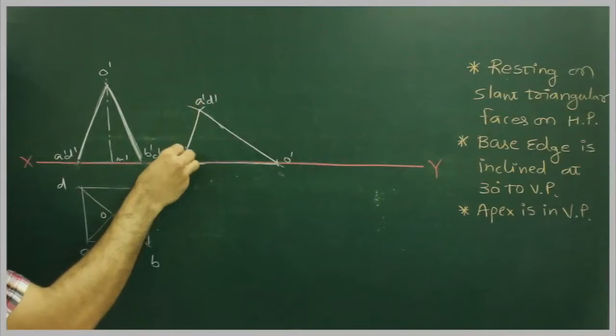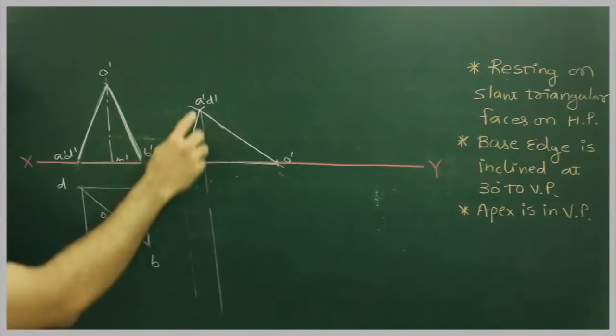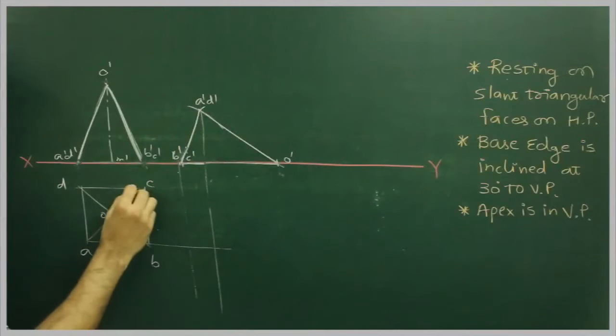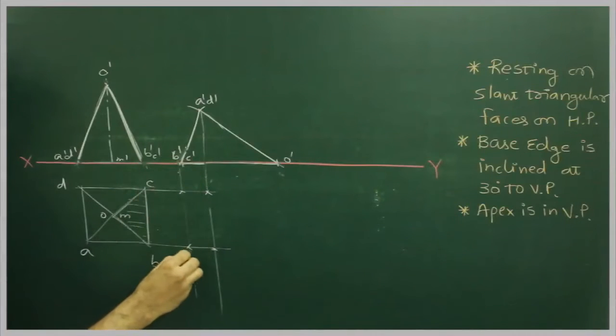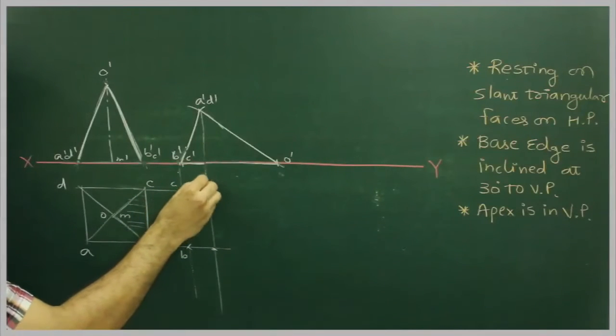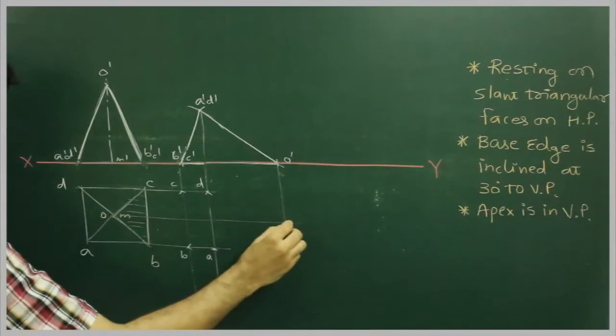This is A'D', this is B'C'. So this is B', C', D', A', O' from here, and O' from here.